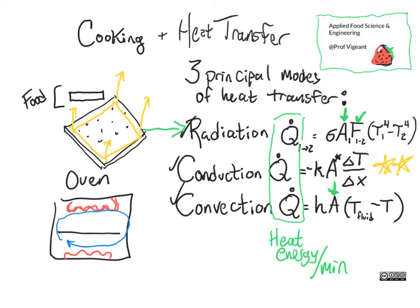You can probably see this: when you want to brown something in the oven, you put it on the top rack as close to the heating element as possible and let that go.